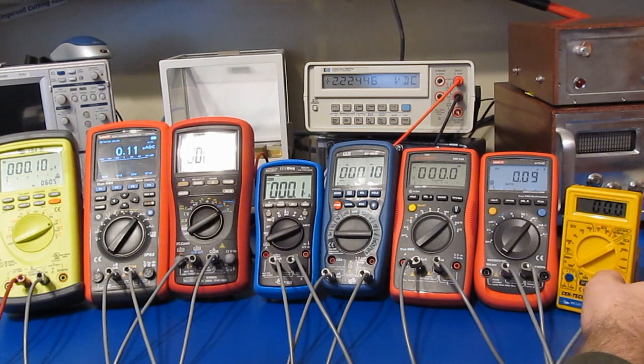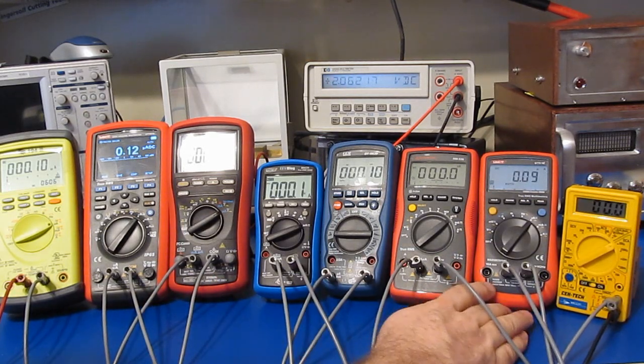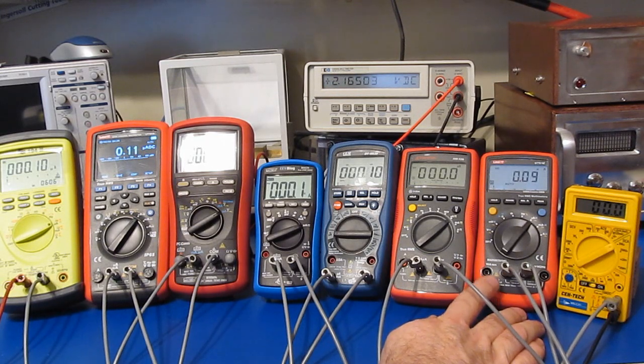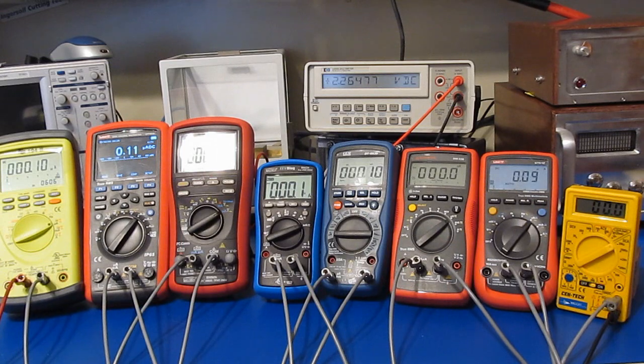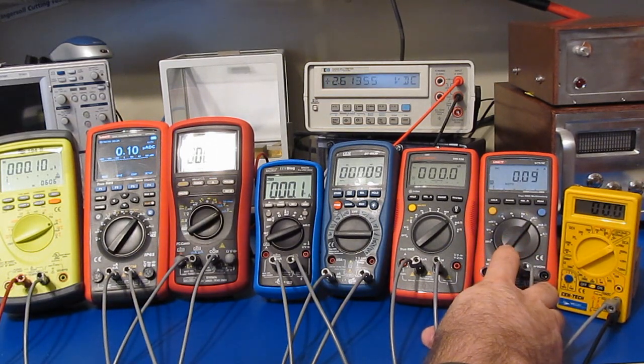Doesn't look like any of the meters actually change the value of the shunt that they're using. Of course the Harbor Freight meter being manual range, it's not going to automatically select. So again, now I kind of wonder, could we take this UT61E and modify it to give us the least amount of burden voltage of the meters up here?